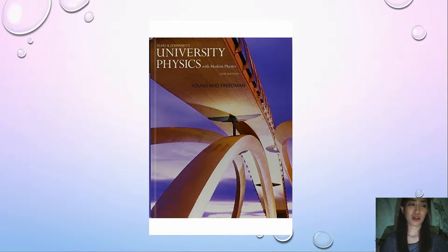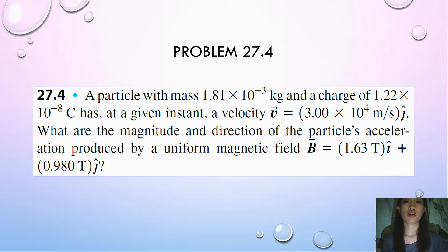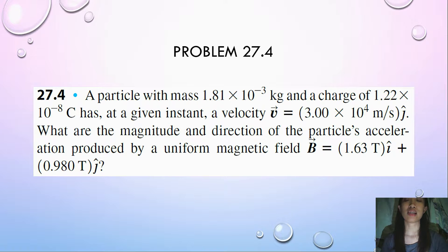Hi everyone! We are here again to discuss another problem from University Physics. Today we will be talking about problem 27.4. A particle with a mass of 1.81 times 10 to the negative 3 kilograms and a charge of 1.22 times 10 to the negative 8 Coulombs has, at a given instant, a velocity equal to 3.0 times 10 to the 4 meters per second j-hat. What are the magnitude and direction of the particle's acceleration produced by the uniform magnetic field B, which equals 1.63 tesla i-hat plus 0.980 tesla j-hat?